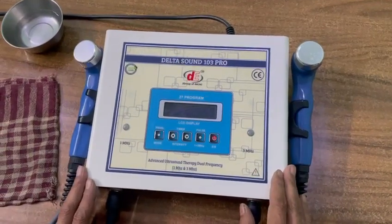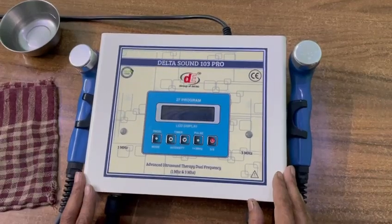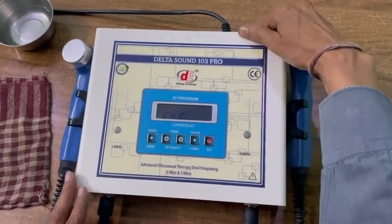Sir, this is Delta Sound 103 Pro Ultrasound Therapy, which works 1 and 3 MHz. Switch on the machine.